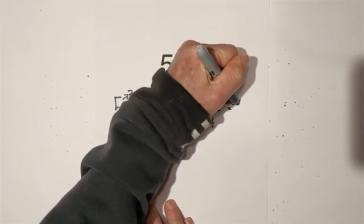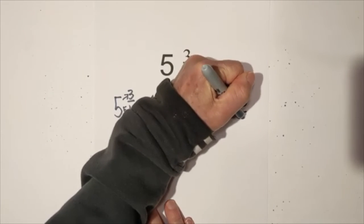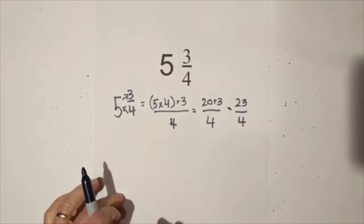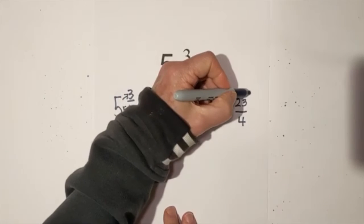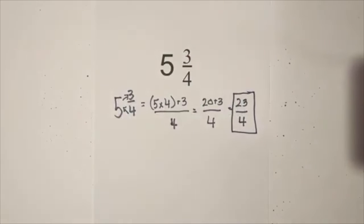And then 20 plus 3 is 23 fourths. So 5 and 3 fourths as an improper fraction is 23 fourths.